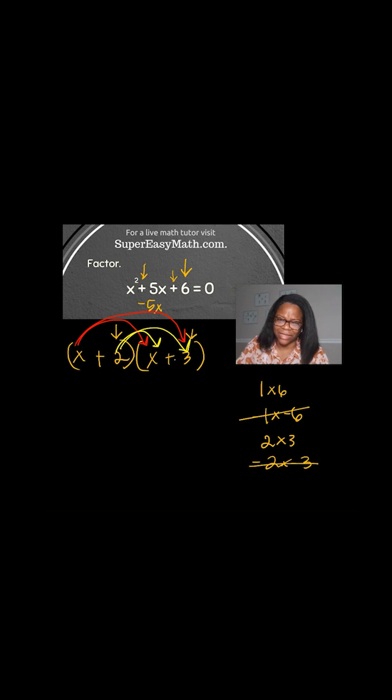When I take that x and multiply it by the other x, I get x². Then when I take that x and multiply it by the 3, I get 3x. When I take the 2 and multiply it by the x, I get 2x. And when I take the 2 and multiply it by the 3, I get 6.